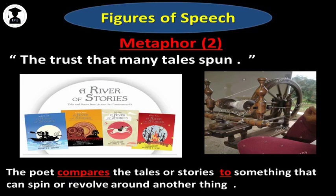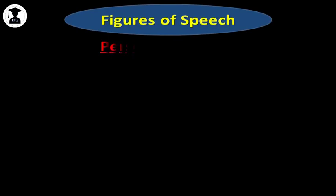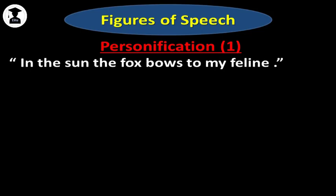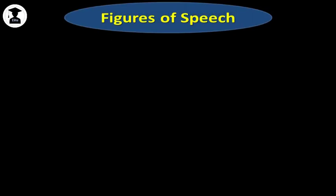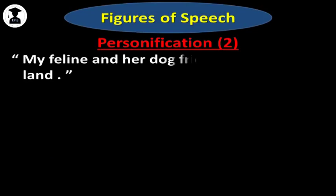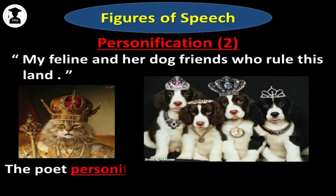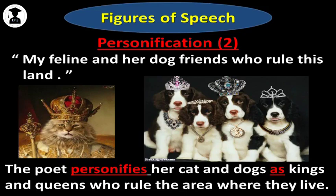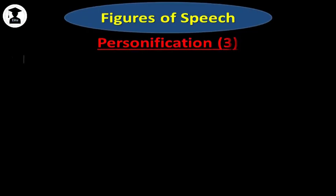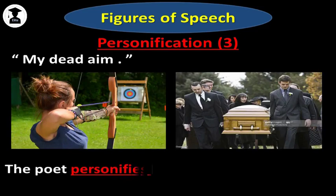The third figure of speech is a personification. In the line 'in the sun, the fox bows to my feline,' the poet personifies the fox as a person who can bow to the poet's cat, as you can see in the photos. The fourth figure of speech is also a personification. In the line 'my feline and her dog friends who rule this land,' the poet personifies her cat and dogs as kings and queens who rule the area where they live. The next figure of speech is also a personification found in the line 'my dead aim.' Here the poet personifies her aim as a dead person.